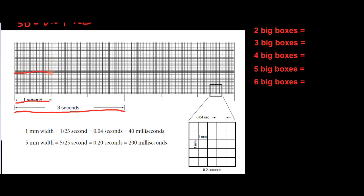Let's assume we have a strip going along and a QRS happens right here, and the next one happens right here. Let's count the big boxes to see how far apart they are: one, two, three, four, five — five big boxes apart. Five times 0.2 equals one second, so the heartbeats are happening one second apart, which means 60 times per minute. If the QRS complexes are five big boxes apart, the heart rate is 60 beats per minute.